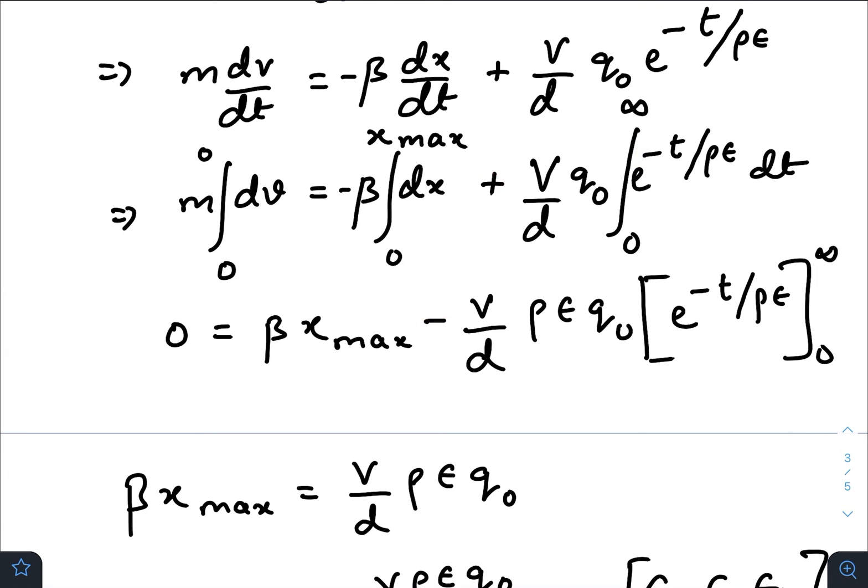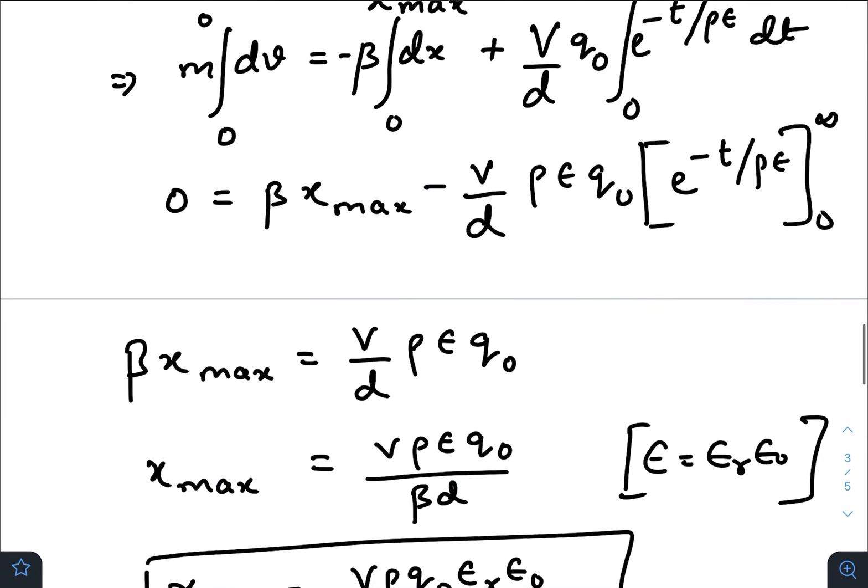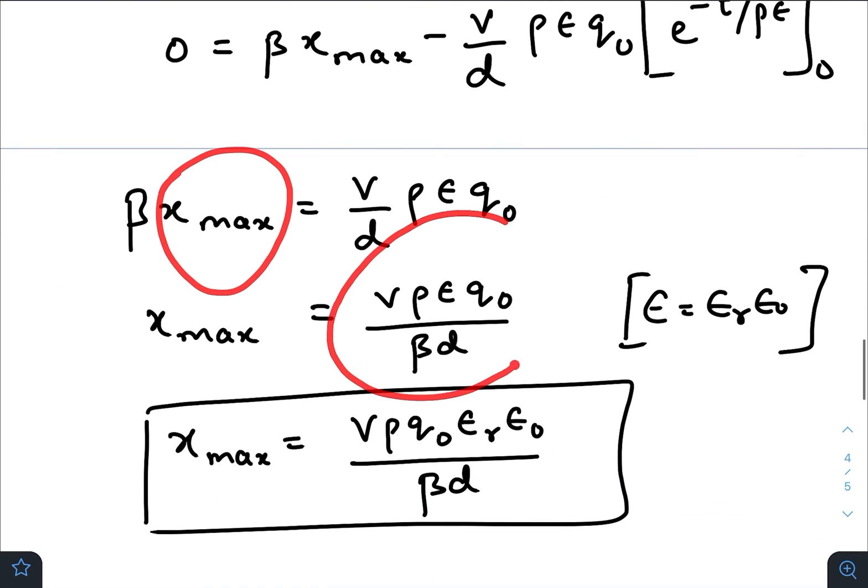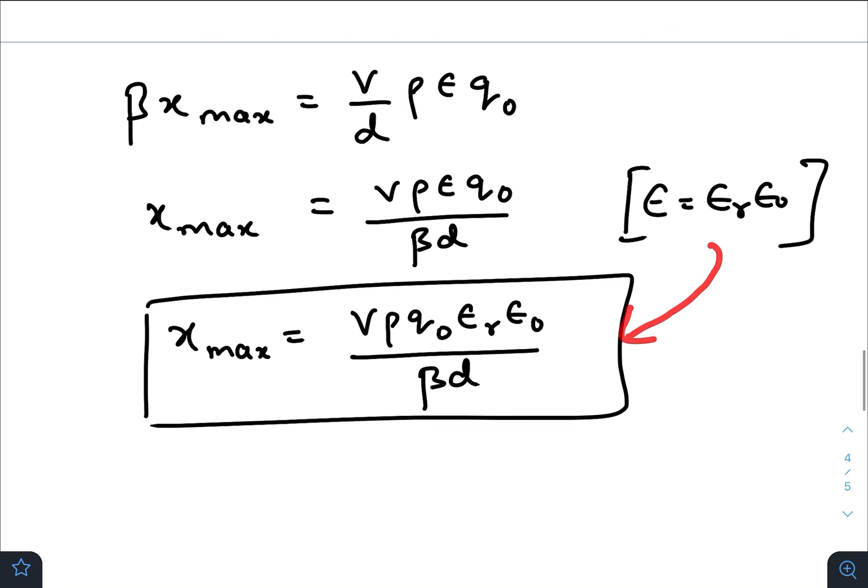Plus becomes minus because minus one over ρε comes in the denominator. After solving, we get x_max equals to this one. Now putting the value of ε, ε equals εᵣ times ε₀. So the final expression for the maximum distance traveled by the charge would be Vρ q₀ εᵣ ε₀ divided by βd.